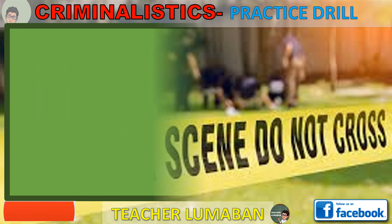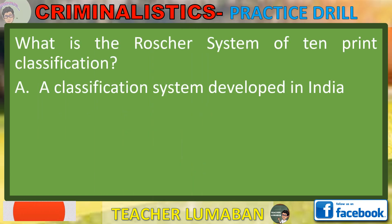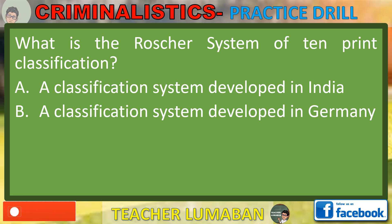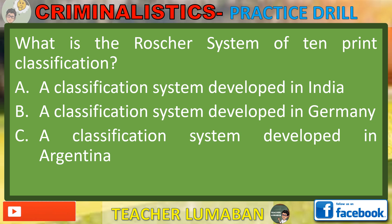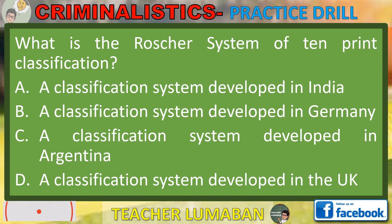What is the Roshier system of 10-print classification? Letter A: A classification system developed in India. Letter B: A classification system developed in Germany. Letter C: A classification system developed in Argentina. Letter D: A classification system developed in the UK. Choose the suitable answer based on the given choices.